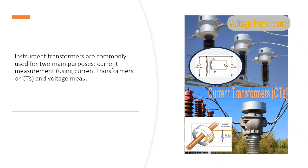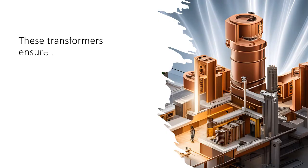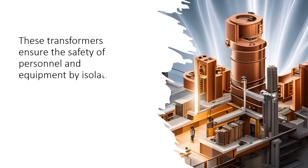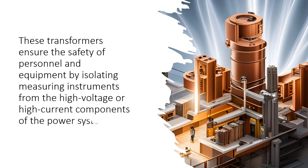Instrument transformers are commonly used for two main purposes: current measurement using current transformers or CTs, and voltage measurement using voltage transformers or VTs. Both provide accurate readings for monitoring and control of electrical systems. These transformers ensure the safety of personnel and equipment by isolating measuring instruments from the high voltage or high current components of the power system.